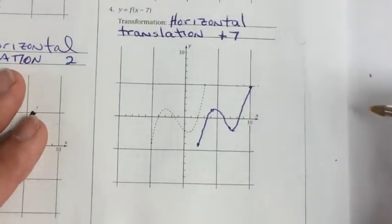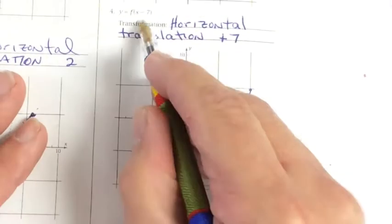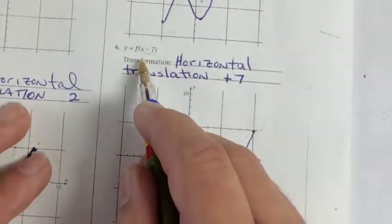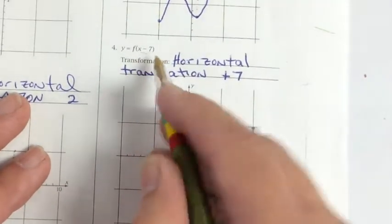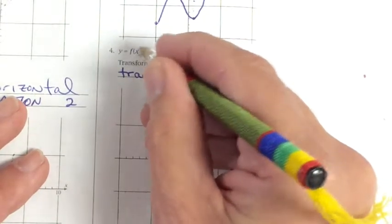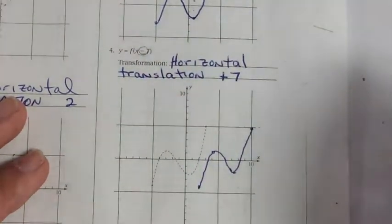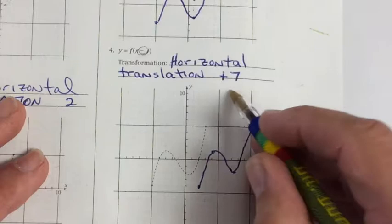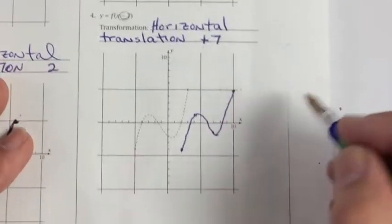And then the horizontal translation. If it's inside, and it is here, then it's a horizontal translation. And if it's horizontal, we take the inverse. In this case, that means positive 7. This is a translation 7 to the right.